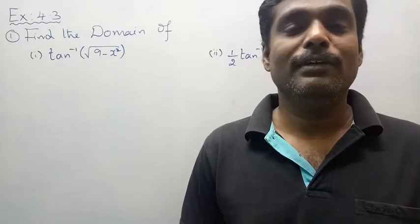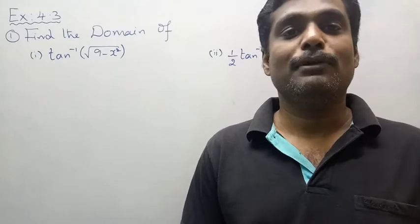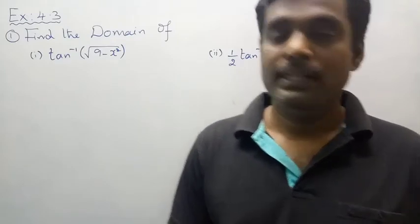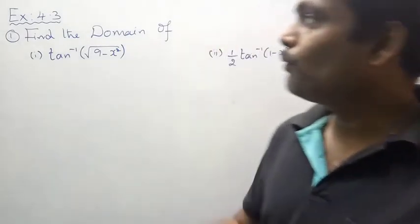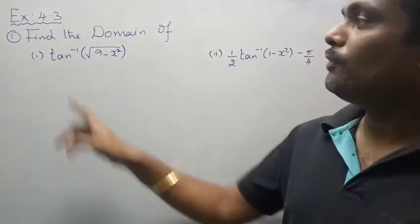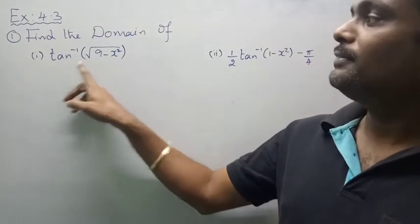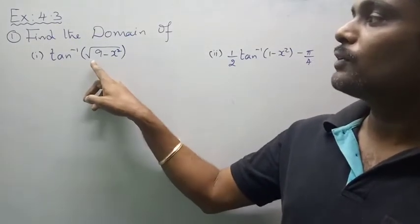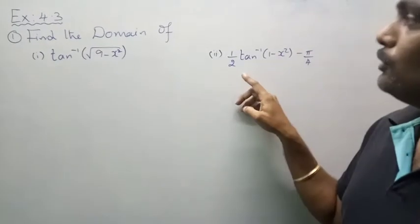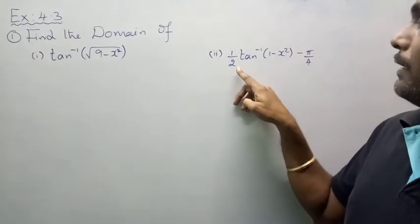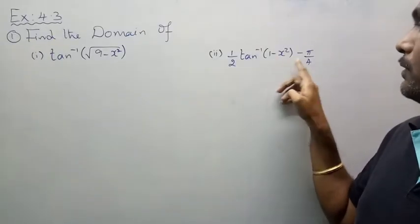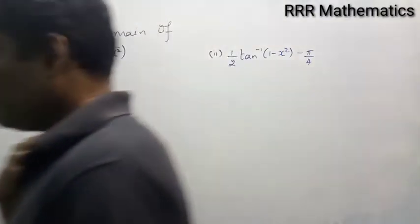Hi my dear students, today we will discuss chapter 4, inverse trigonometric functions, Exercise 4.3, question number 1. Find the domain of tan inverse of square root of 9 minus x squared, and find the domain of half times tan inverse of 1 minus x squared minus 5 by 4.